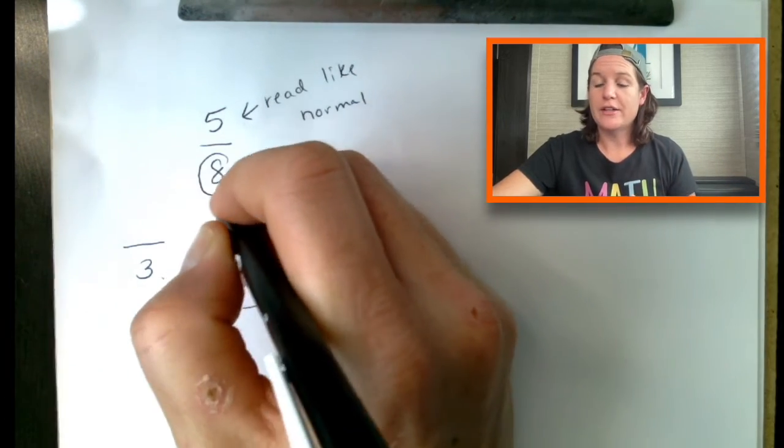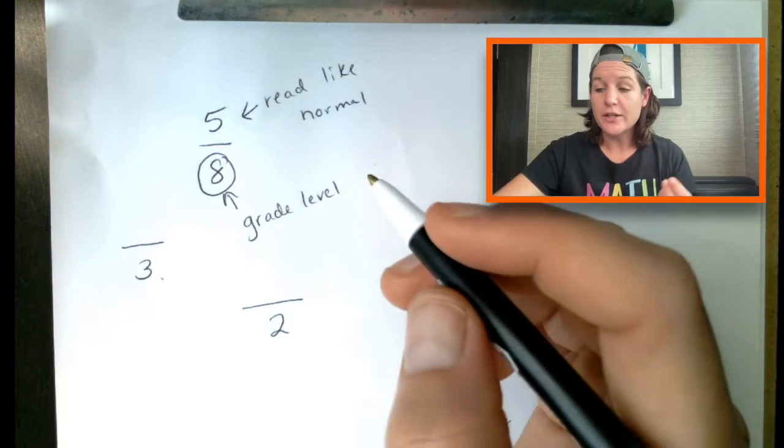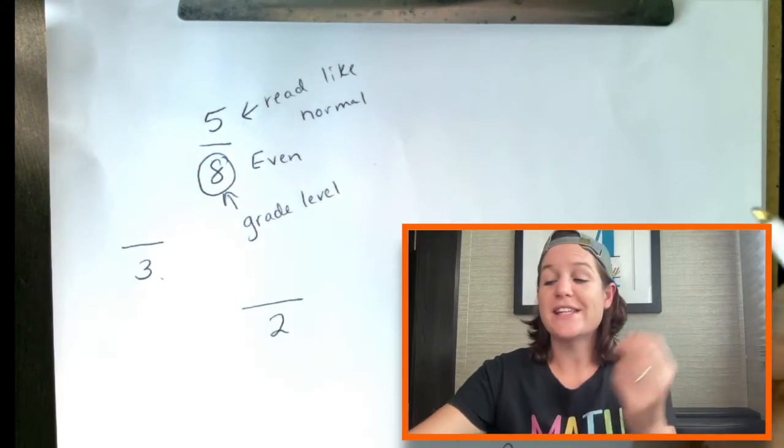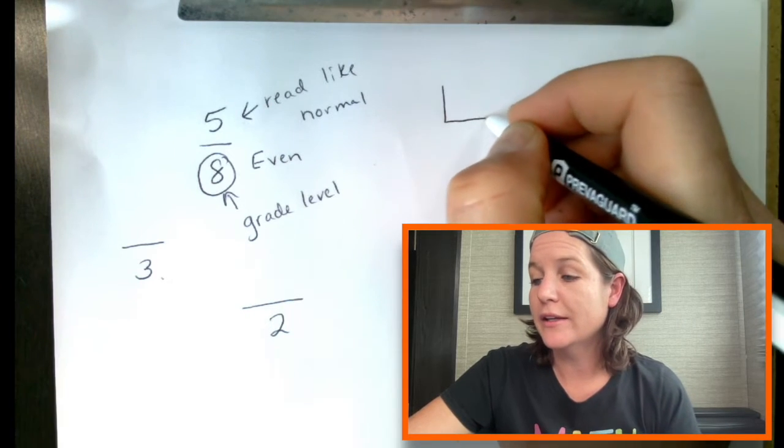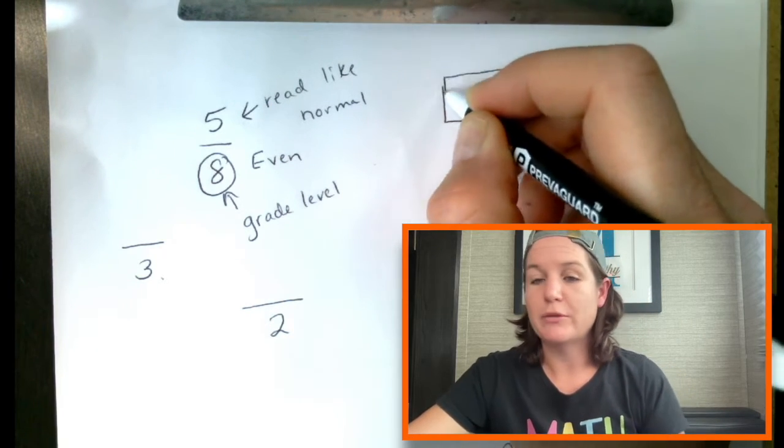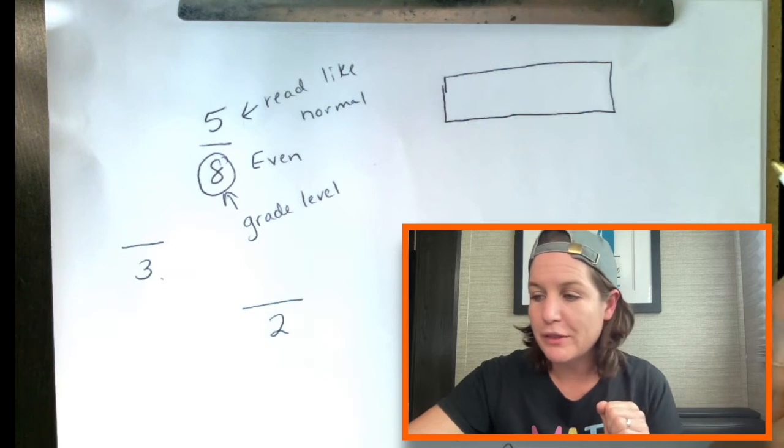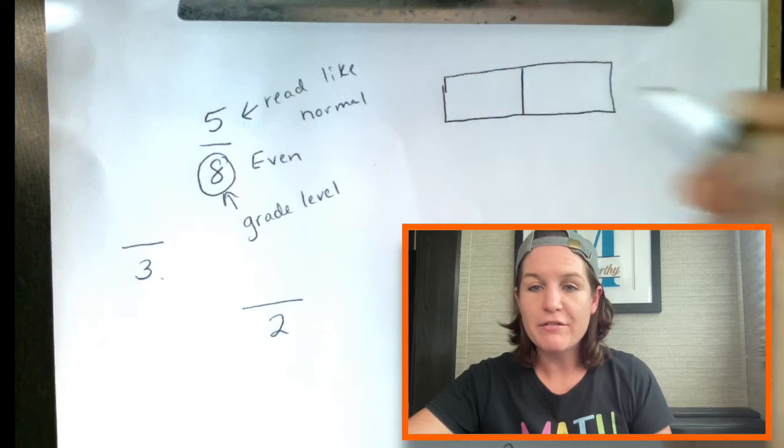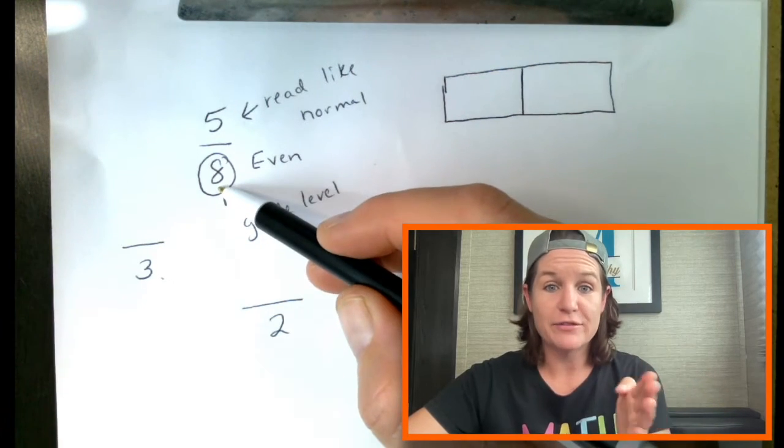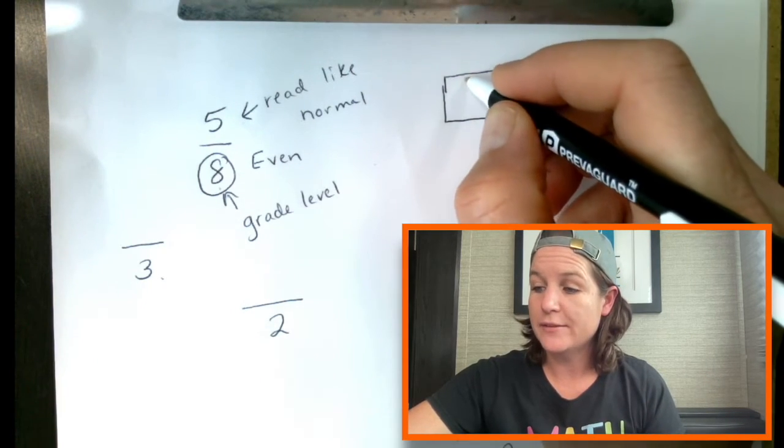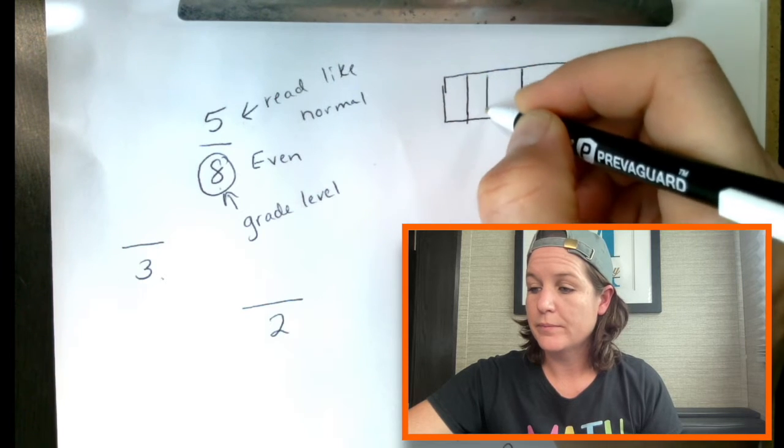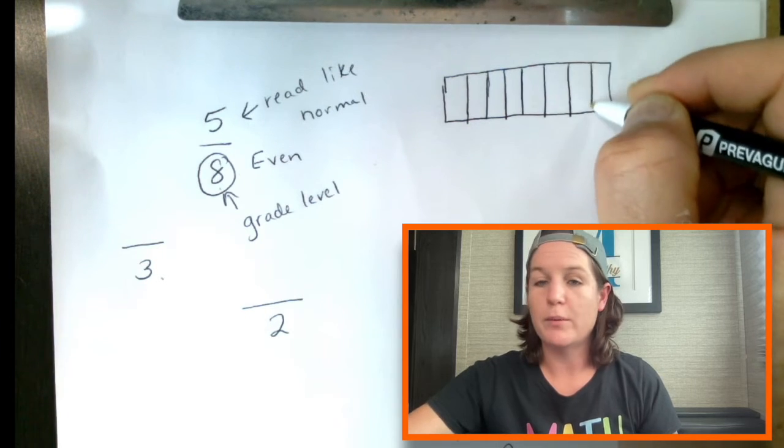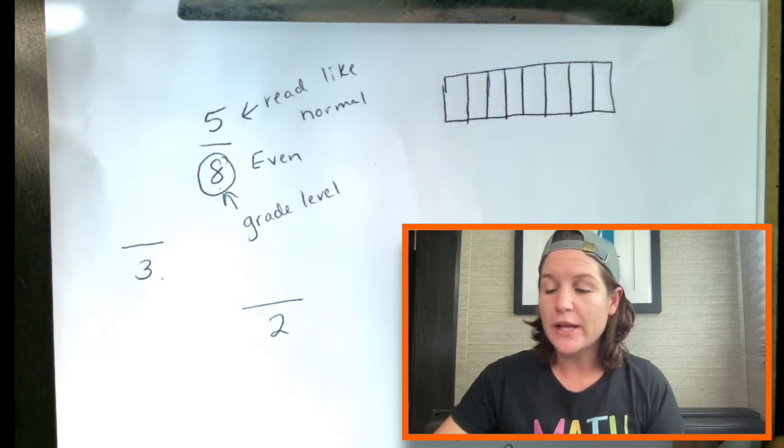Now the denominator here is the total number of equal parts. And it's even this time. Because it's even, if I'm modeling with my rectangle that I love modeling with, if it's even, I can go ahead and cut the rectangle in half and then cut this in half too. I can do four parts on this side and four parts on this side, four equal parts. Again, trying to make them look as equal as possible.